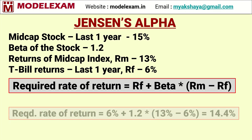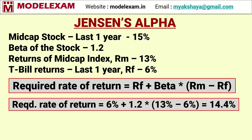Now let us substitute the values. We get the answer as 14.4%. This means that the stock should deliver at least 14.4% return for the risk it has. Investors should get at least 14.4% return — only then this stock is viable. Any return less than 14.4% is not viable and should not be considered for investment.